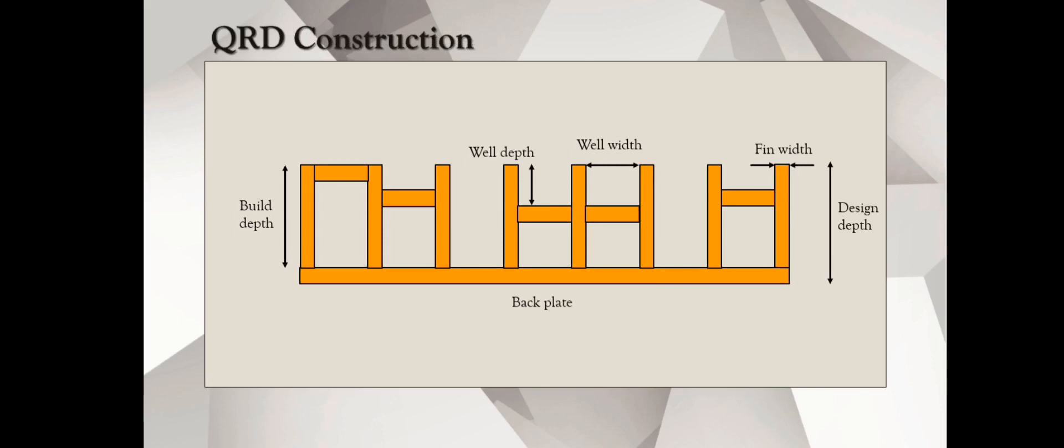Let's study the QRD in detail. First, you have the back plate that holds all the wells and the fins together, and this vertical member that you see, that's called as a fin, and the thickness or the width of that fin is a fin width. These fins are actually dividing the entire diffuser, they're acting as a partition and creating some spaces in between the fins, and that space is the wells, and the distance between those two fins is the well width, and these are the well depths. Build depth is the total height of the fin, whereas the design depth is actually the build depth plus the thickness of the back plate. This quantity design depth is very useful, very important for determining the frequency response of the QRD. The well depth keeps changing. It's because it is based on the quadratic residue sequence.